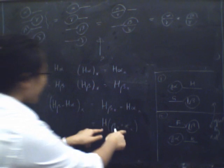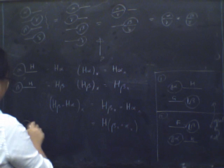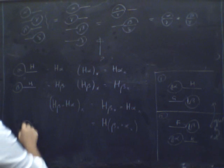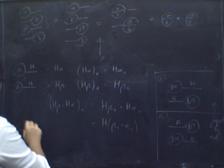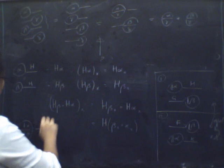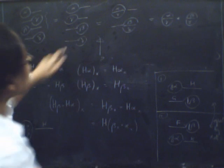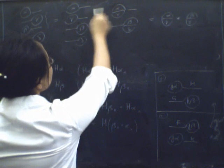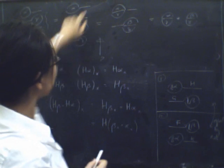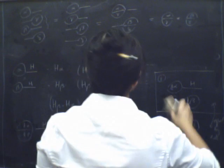And look, this is therefore the vertical composite alpha followed by beta with an H stuck on the end. So actually, this part here follows from the functoriality of this. So that follows from functoriality. Now what about this other one?